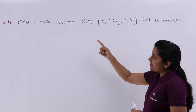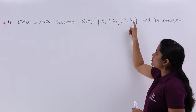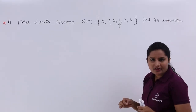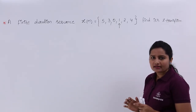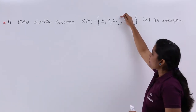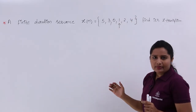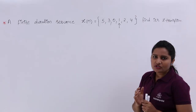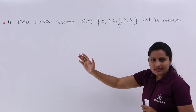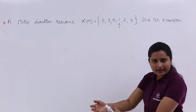You can observe the problem: a finite duration sequence X of n is equivalent to {5, 3, 0, 1, 2, 4}. Whenever you see this arrow mark, you need to understand that it indicates the X of 0 term — that is, the value of the signal at n equal to 0. The remaining samples to the right of X of 0 are positive samples, and the remaining samples to the left are X of minus 1, minus 2, minus 3, and so on.